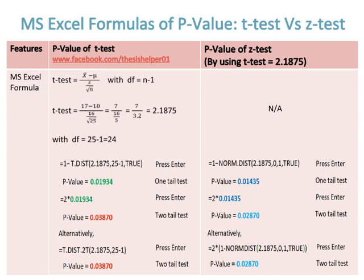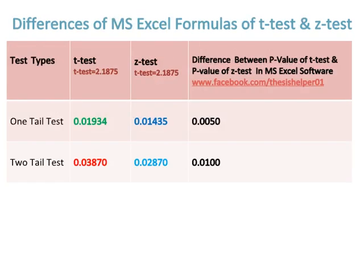Based on my own knowledge and experience, so p-value of t-test is 0.03870 for two tails, while p-value of z-test is 0.02870 for two tails. Differences of MS Excel formulas of t-test and z-test by using t-test value of 2.1875.